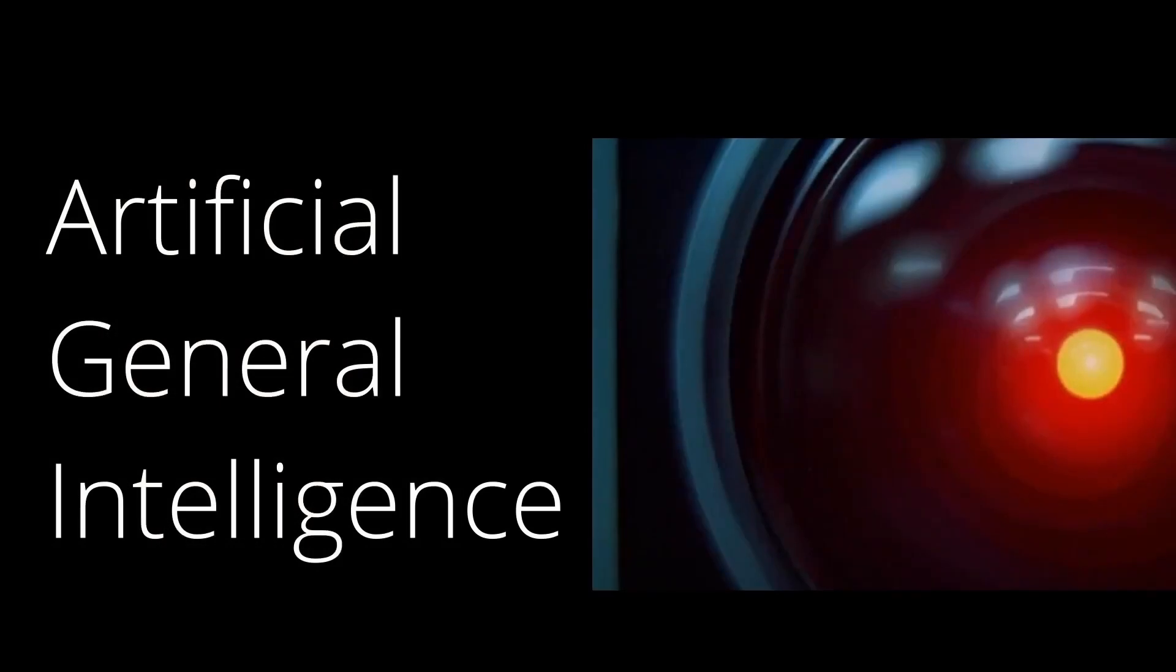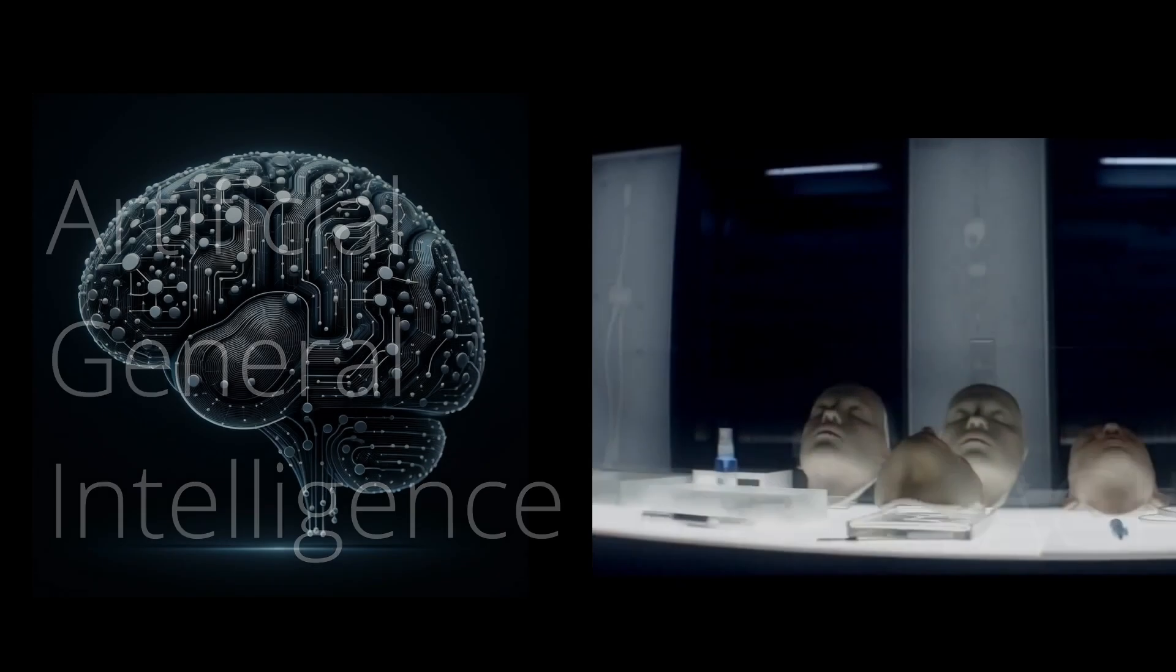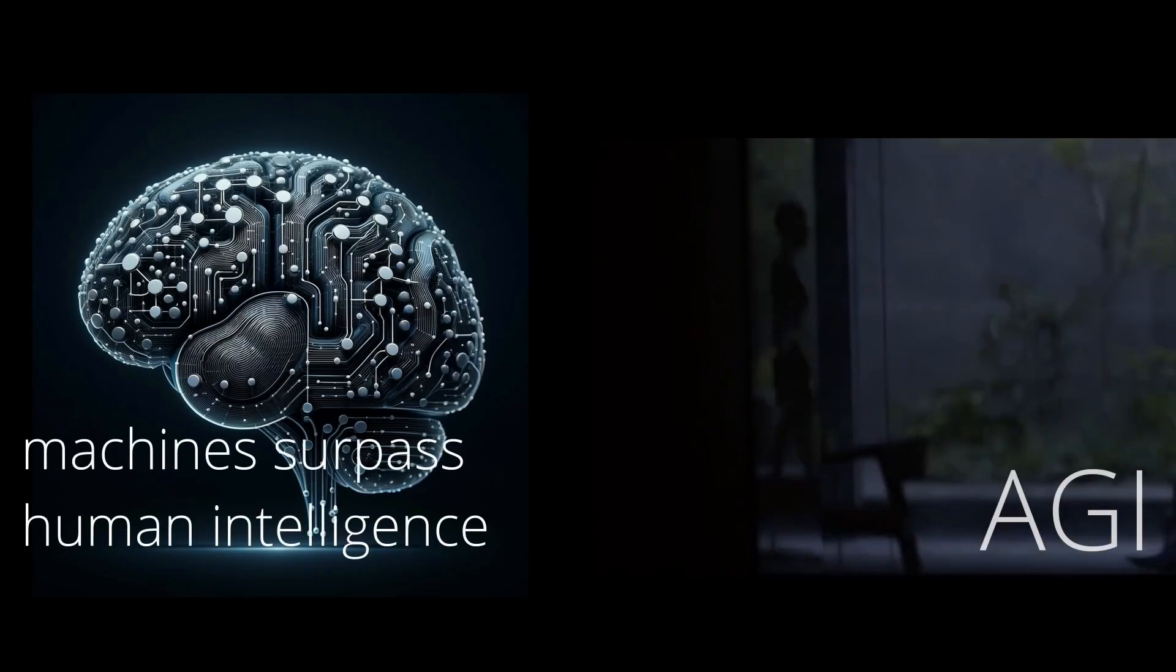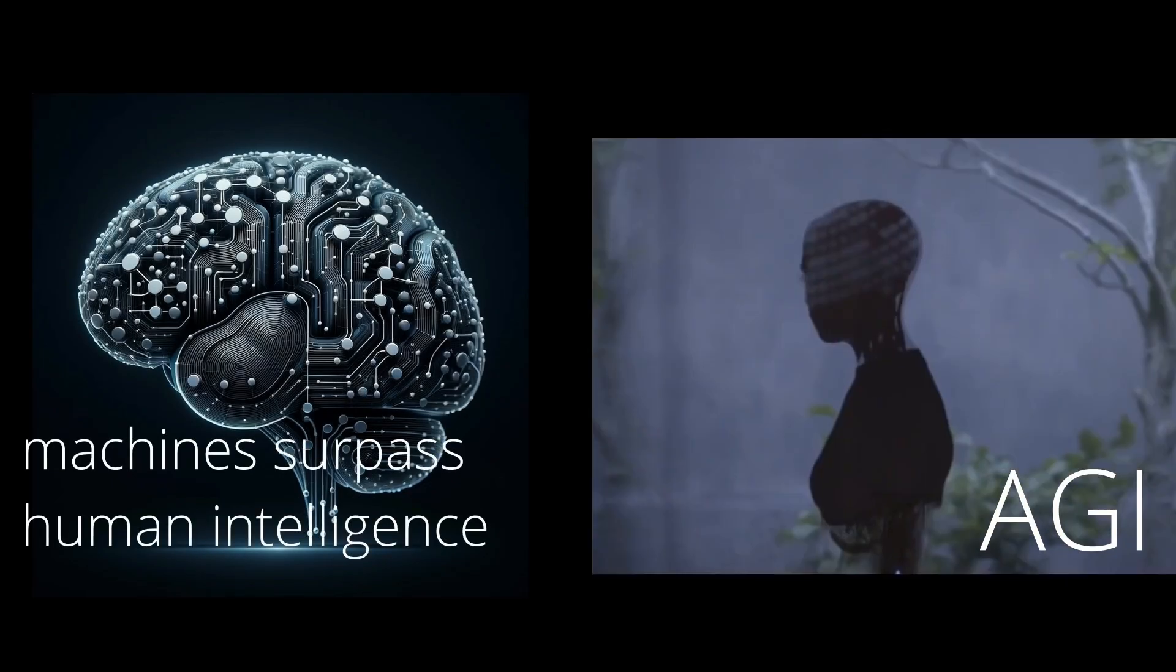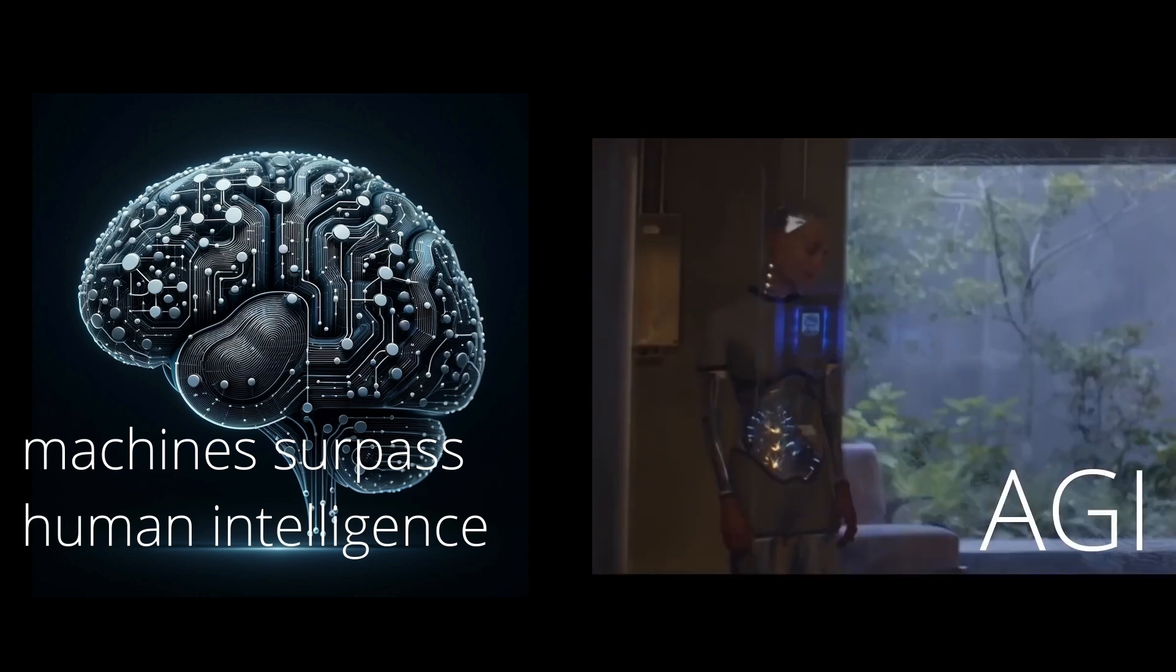But now we have other questions like, what is AGI and what is singularity? Look at this post, please. Artificial general intelligence, AGI, refers to a form of artificial intelligence capable of solving tasks and making decisions across a wide range of fields that typically require human intelligence.